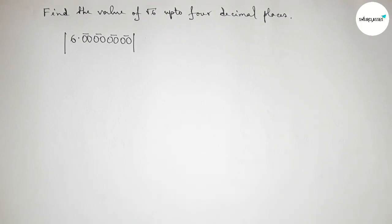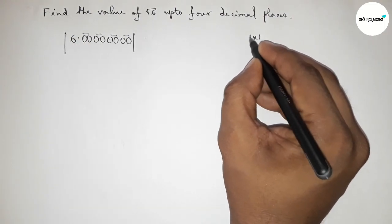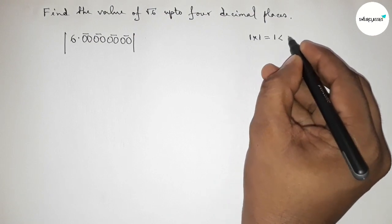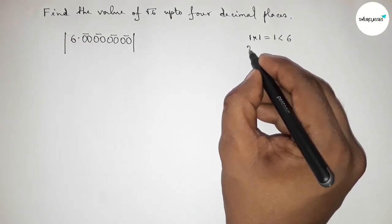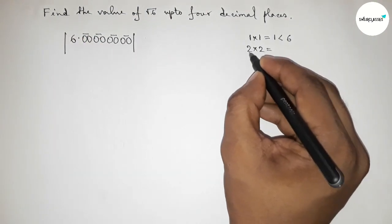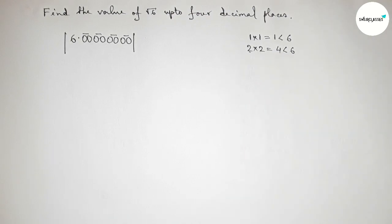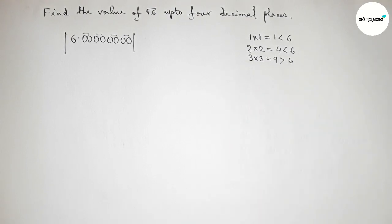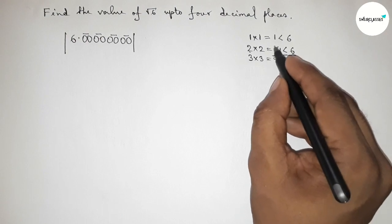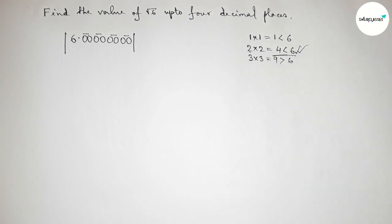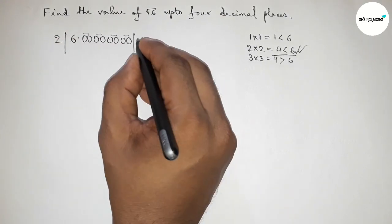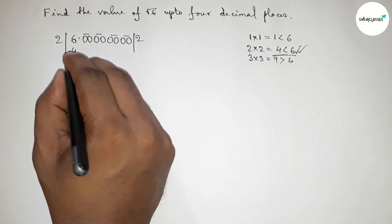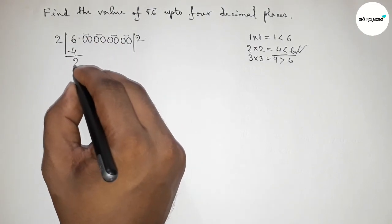Now for an important step: we have to take a number and multiply it by itself. Taking 1 × 1 = 1, which is less than 6. Taking 2 × 2 = 4, which is less than and almost near 6. Taking 3 × 3 = 9, which is greater than 6. So we take 2, since 4 is almost near and less than 6. Putting 2 here, and 2 × 2 = 4.